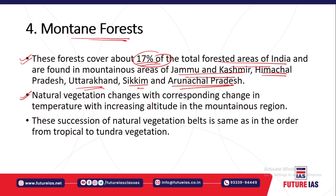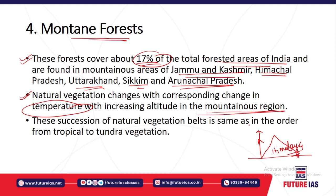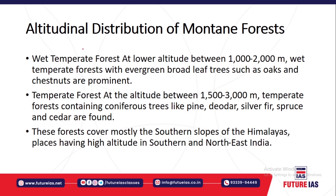As you move from the bottom to the top of a hill or Himalaya, the vegetation changes because there are changes in temperature, moisture, and environmental conditions, and the nature of vegetation changes accordingly. The succession of natural vegetation belt is in the same order from tropical to tundra vegetation as you move upward.